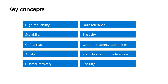High availability refers to systems that are durable and likely to operate continuously without failure for a long time. If you're operating an application or a system, you want it to be highly available. Scalability is the property of a system to handle a growing amount of work by adding resources to the system. If my application has been architected for scalability, as soon as I see a large amount of demand, the system will scale up or scale out to address that demand.